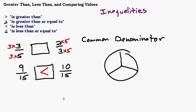So I hope in this video you got a good idea of what all these symbols mean: is greater than, is greater than or equal to, is less than, is less than or equal to. Have some way to memorize which symbol goes with which phrase. You should be able to determine whether statements are true or false involving these symbols, and also compare decimals and fractions. Hope that helped.